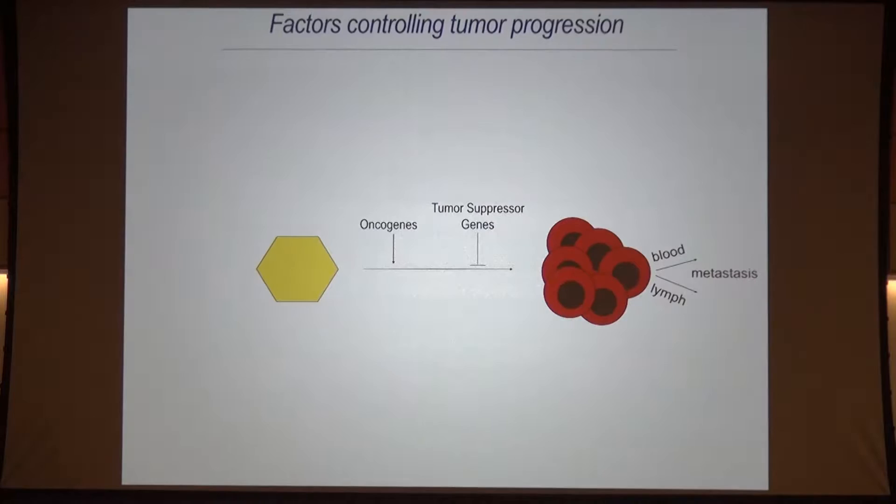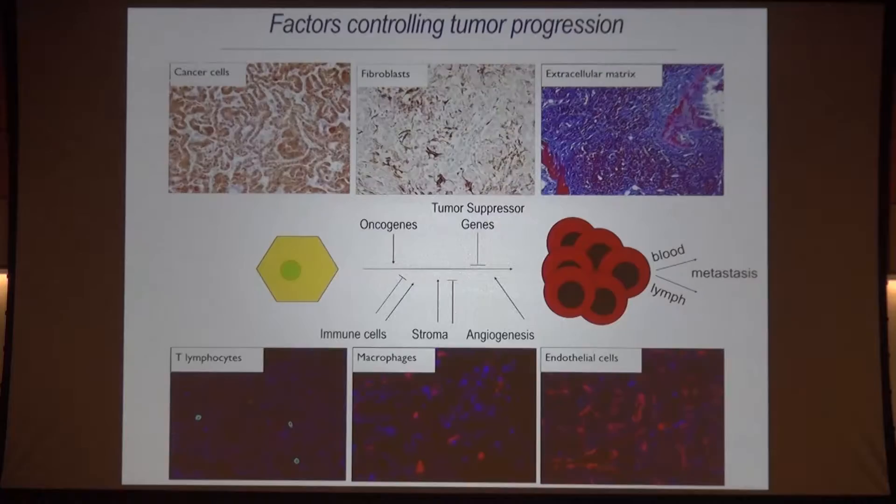Everybody here knows that cancer cells arise from normal cells through mutations in cellular genes. These promote proliferation, as well as invasion and metastasis. But cancer is much more complex — it involves interactions with many cells of the body, and importantly, interactions with cells of the immune system, which can both promote and inhibit tumorigenesis. Because of these complex interactions, for many years now, we have been using in vivo systems to study tumorigenesis so that we can begin to explore and tease apart these various interactions.